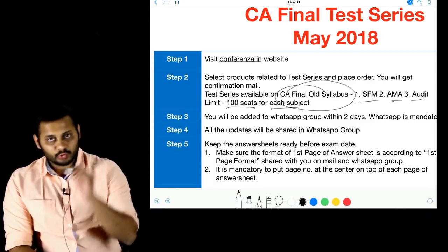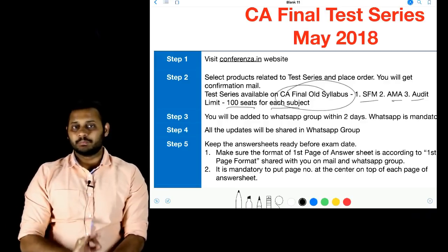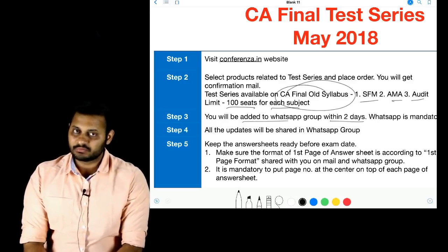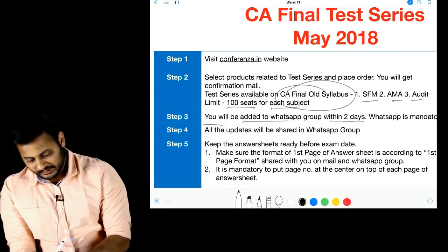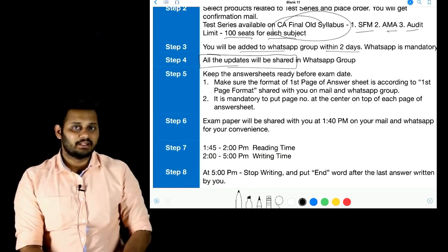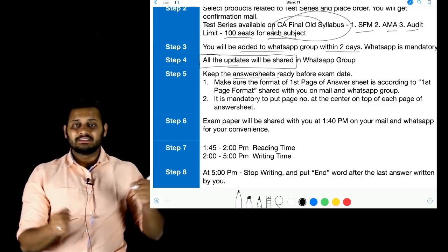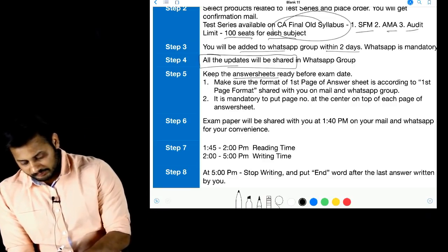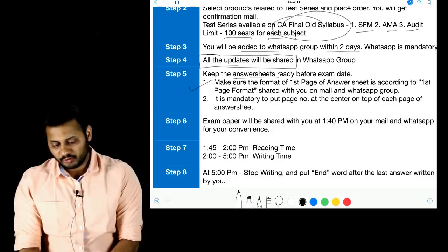Once you place your order, you will be added to a WhatsApp group within two days. You will get confirmation via the WhatsApp group. Now, what do you need for the exam? You need your answer sheets. Remove your answer sheets first, and make sure the format of the first page of the answer sheet is according to the format that will be shared with you via mail and WhatsApp group.